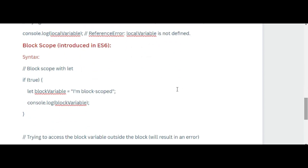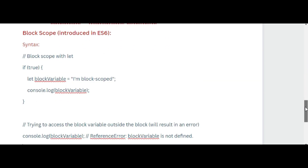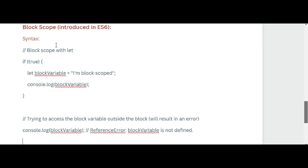Now let's come to block scope. The let and const keywords allow the creation of variables with block scope. Variables declared with let or const are only accessible within the block where they are defined.